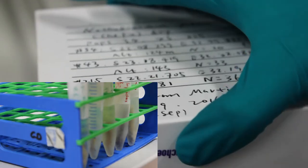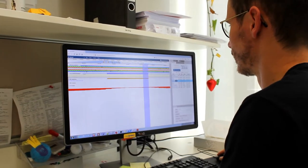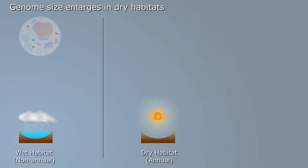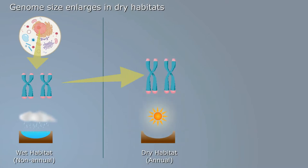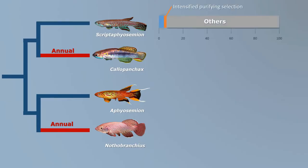To examine the genomic changes that occur in short-lived annual killifish, we sequenced the genomes of 45 annual and non-annual species, covering all major genera of the African killifish family. We found that annual killifish have a larger genome and are under weaker natural selection. Larger genomes in annual killifish are full of repetitive DNA elements, or transposons.